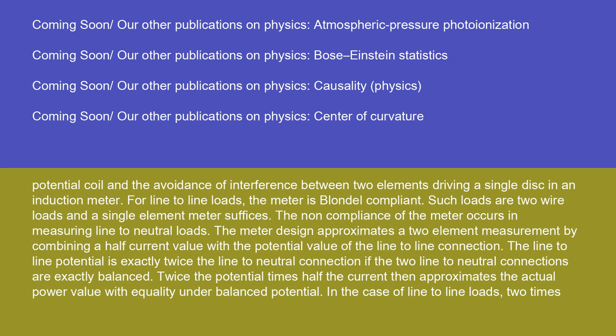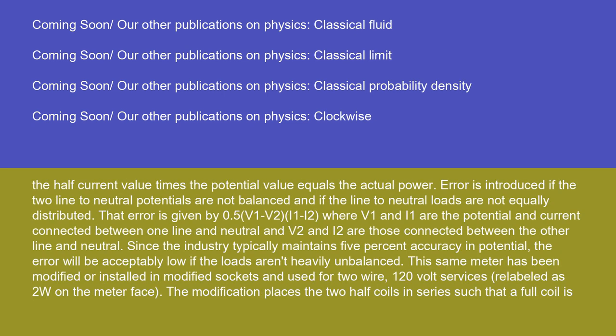For line-to-line loads, the meter is Blondel compliant, as such loads are two-wire loads and a single-element meter suffices. The non-compliance of the meter occurs in measuring line-to-neutral loads. The meter design approximates a two-element measurement by combining a half-current value with the potential value of the line-to-line connection. The line-to-line potential is exactly twice the line-to-neutral connection if the two line-to-neutral connections are exactly balanced. Twice the potential times half the current then approximates the actual power value under balanced potential. Error is introduced if the two line-to-neutral potentials are not balanced and if the line-to-neutral loads are not equally distributed.